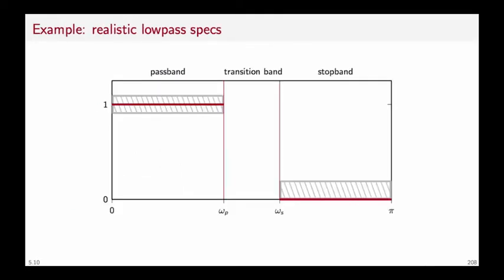We can plot the realistic low-pass specifications graphically. Instead of having one cut-off frequency, we have a transition band between a frequency omega p, which specifies the end of the pass band, to a frequency omega s, which specifies the beginning of the stop band. And instead of having one desired value for stop band and pass band, we have tolerance regions within which the frequency response can wiggle.